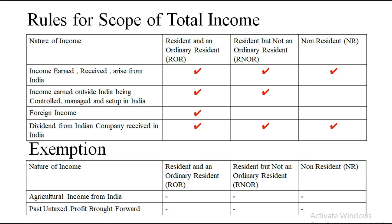So to summarize: income in India, everyone pays. Controlled from India, first two people pay. Foreign income, the first person pays. Agriculture income from India, no one pays. And past untaxed profit, again no one pays. These are the only rules that need to be kept in mind. Now let us see how to solve a sum based on these rules.